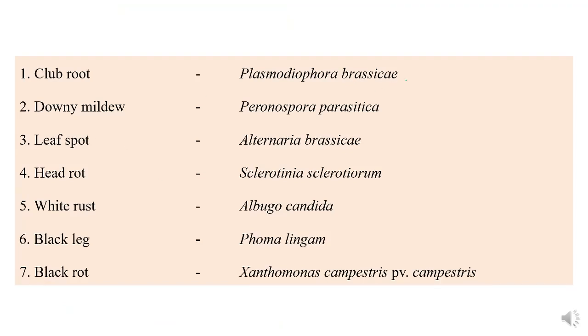The first disease is club root, caused by Plasmodiophora brassicae. Second is downy mildew, caused by Peronospora parasitica. Next is leaf spot, caused by Alternaria brassicae. Then head rot, caused by Sclerotinia sclerotiorum. White rust is caused by Albugo candida, black leg is caused by Phoma lingam, and the last one is the bacterial disease black rot, caused by Xanthomonas campestris pv. campestris.